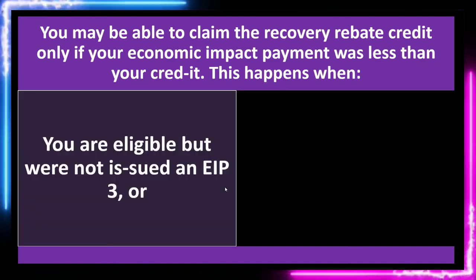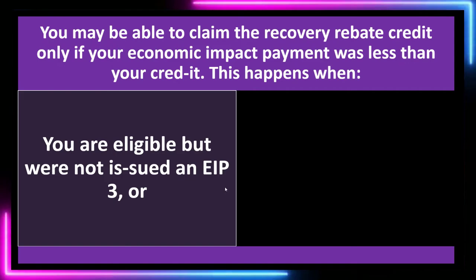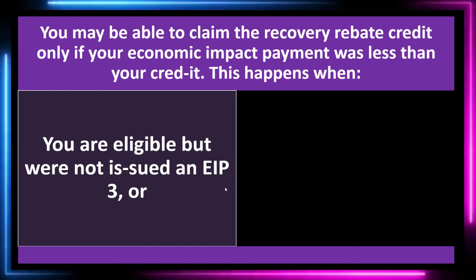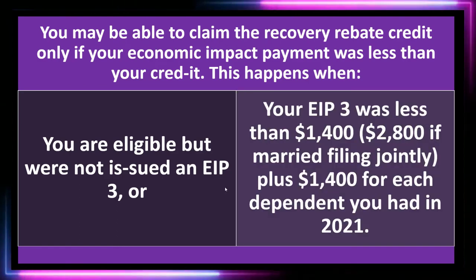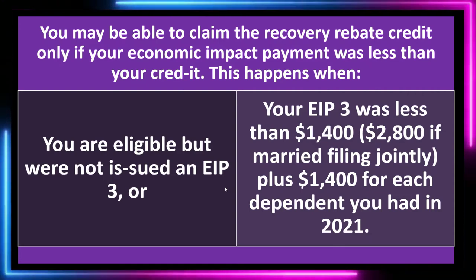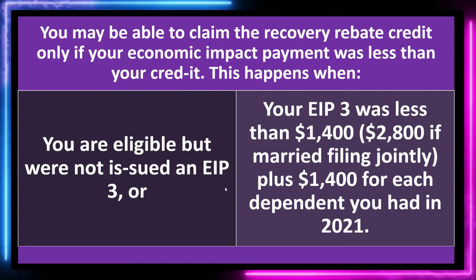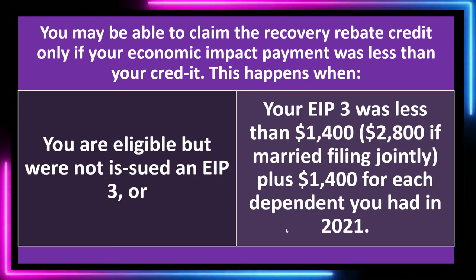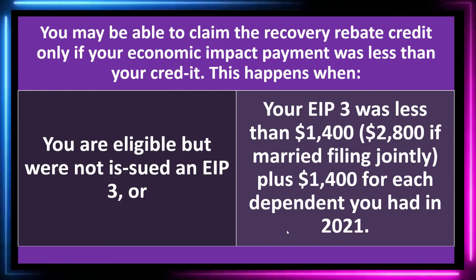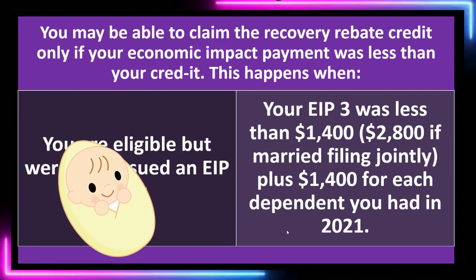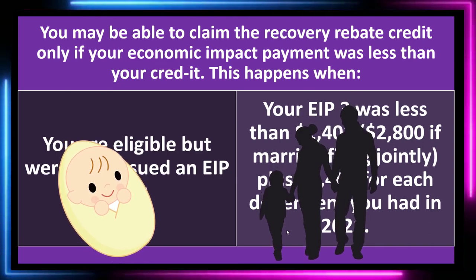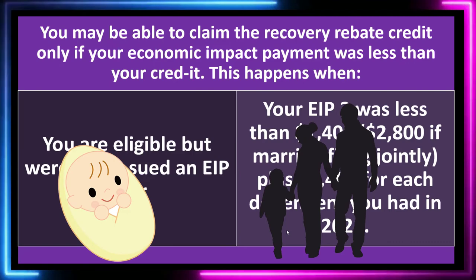That's when the recovery rebate credit comes into action. You may be eligible if you were not issued an EIP3 at all — possibly because the IRS didn't have your information. Or your EIP3 was less than $1,400 (or $2,800 if married filing jointly) plus $1,400 for each dependent you had in 2021. That could happen if they didn't have dependent information, if a new child was born or an adoption occurred, or because of an income phase-out.